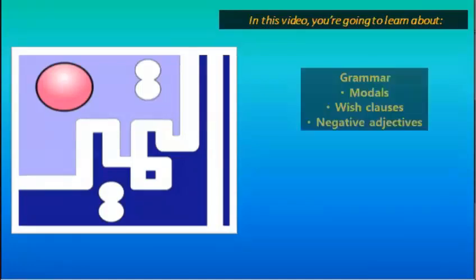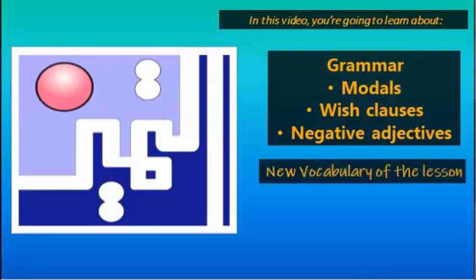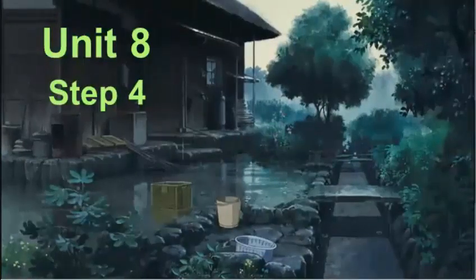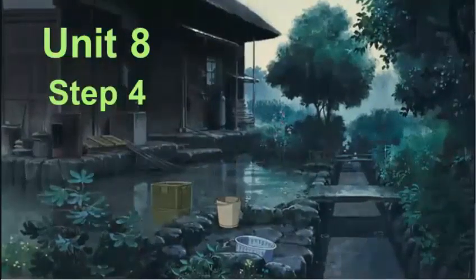The first thing is about grammar rules. We are going to talk about modals, which clauses, and some negative adjectives — how to make a negative adjective. Next, you have to learn some new vocabulary of the lesson. Let's get started. This is Unit 8, so let's start with Lesson 4.